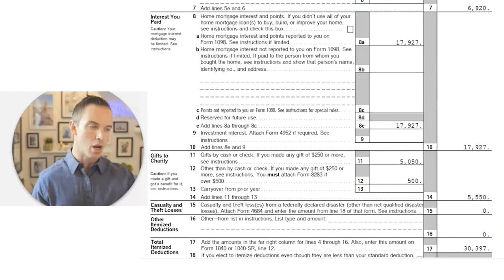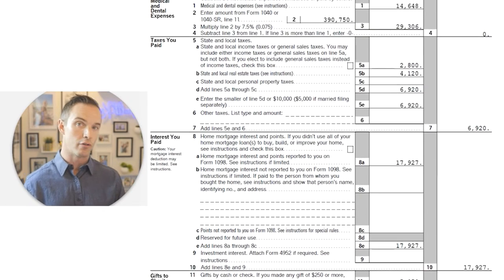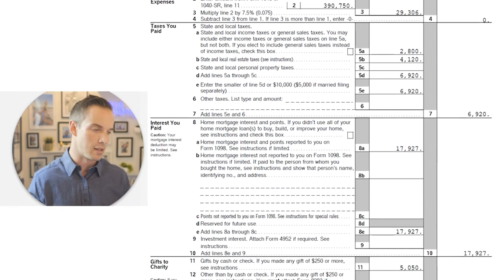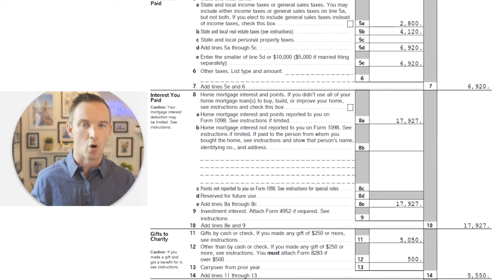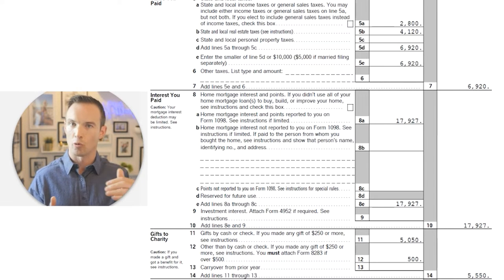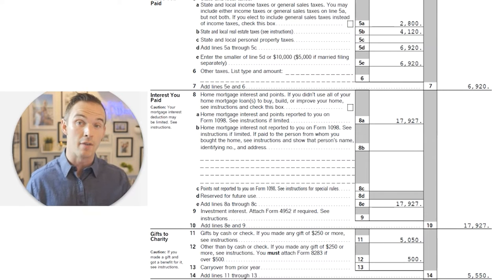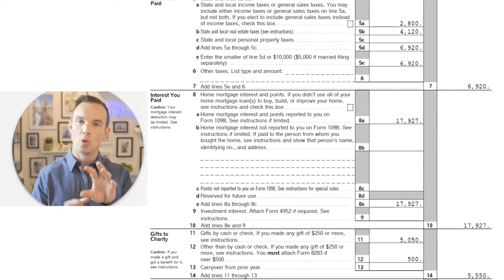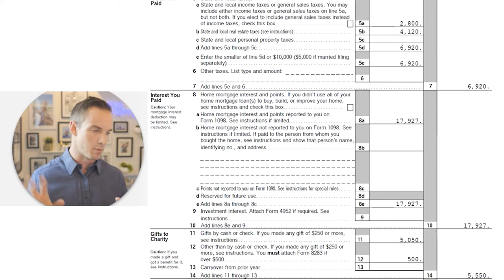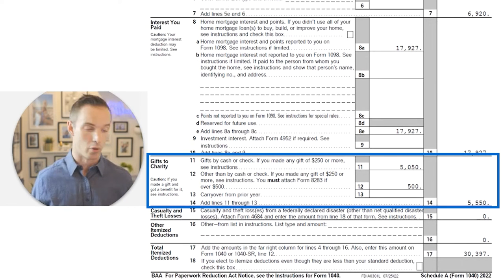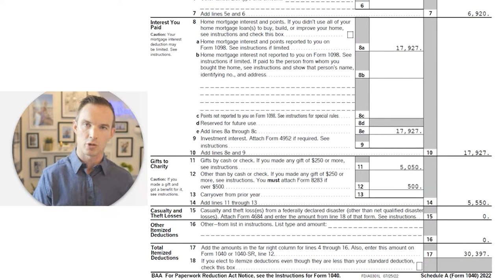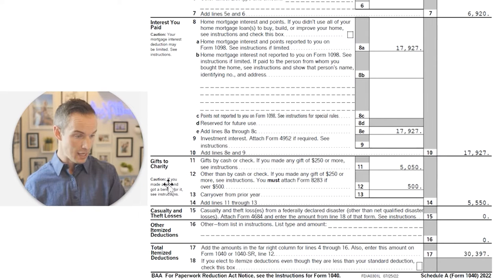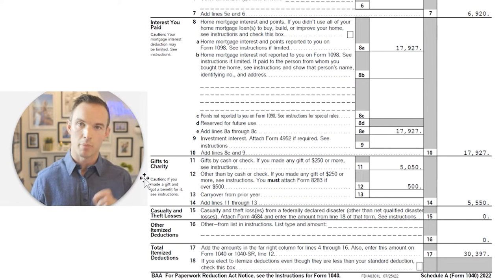So what should you be tracking to possibly itemize? Medical expenses, taxes paid (which shows up in your W-2), mortgage interest (from Form 1098 sent by your mortgage provider at year-end), and charitable gifts. One tip: if you moved mid-year, don't forget you'll have two separate mortgage interest forms. We see clients miss that one regularly. Charity is what we're going to build on next in the tax planning software.